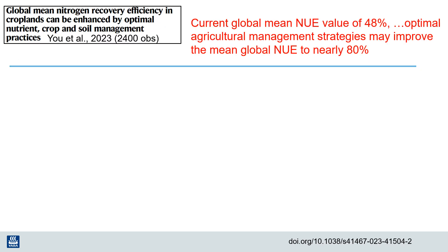A nice review of the global scientific literature was recently done by a research group led by Dr. Yu. They published a report in 2023 where they reviewed over 2,400 research sites to identify which practices actually make a difference in improving nitrogen use efficiency. They state that the current global average nitrogen use efficiency of 48% can be increased up to 80% by implementing a variety of changes.